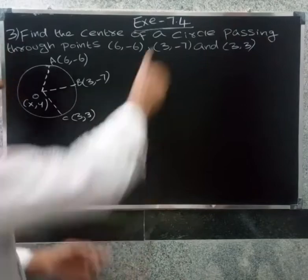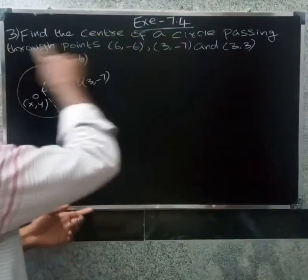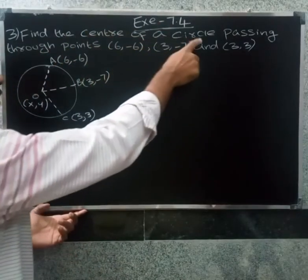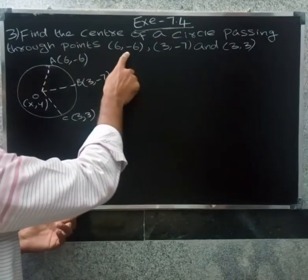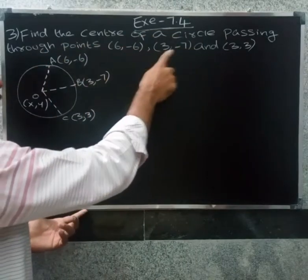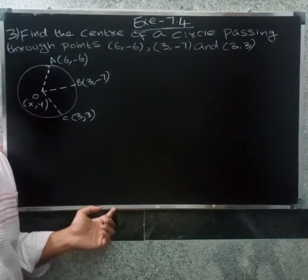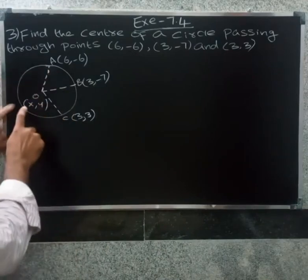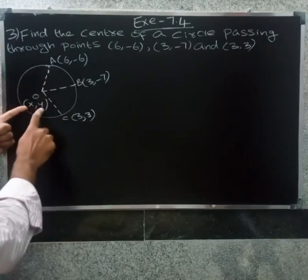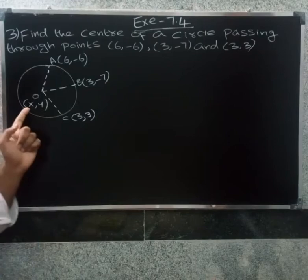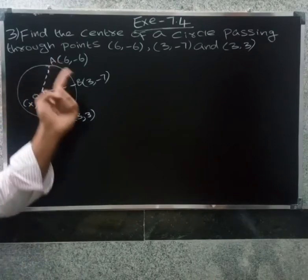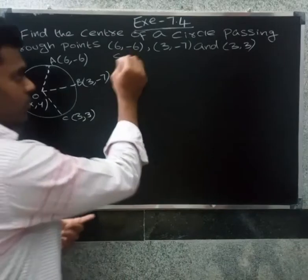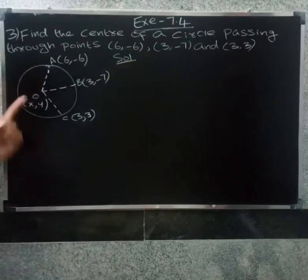Okay friends, we make this question. Find the center of a circle passing through the points six comma minus six, three comma minus seven, and three comma three. So the center of the circle is the point x comma y.